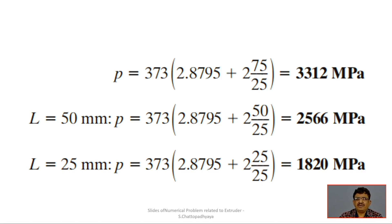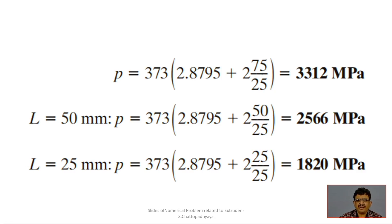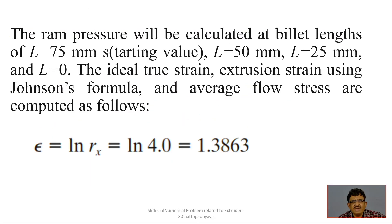For the first case, pressure = 373 × (2.8795 + 2×75/25). With L = 75mm and D₀ = 25mm, the calculation gives a pressure of 3312 MPa at the initial remaining billet length of 75mm.